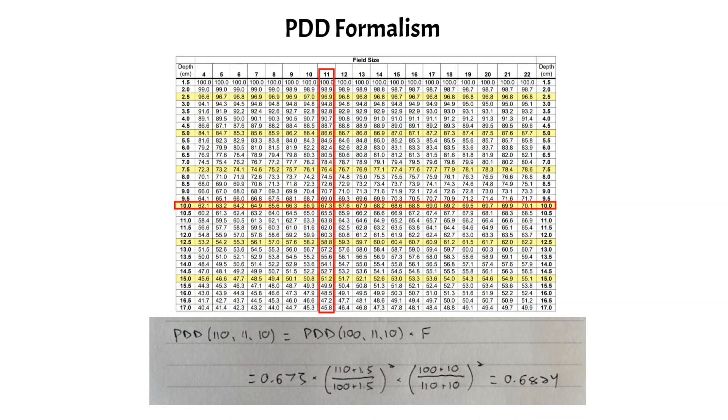So we can just apply the Maynard F factor to that value. And the Maynard F factor is listed there. If you don't recall the equation for that, please go review it before continuing. But applying that F factor is going to give a new PDD value at 110 centimeters of 0.6824. So that's what we will use in our calculation.